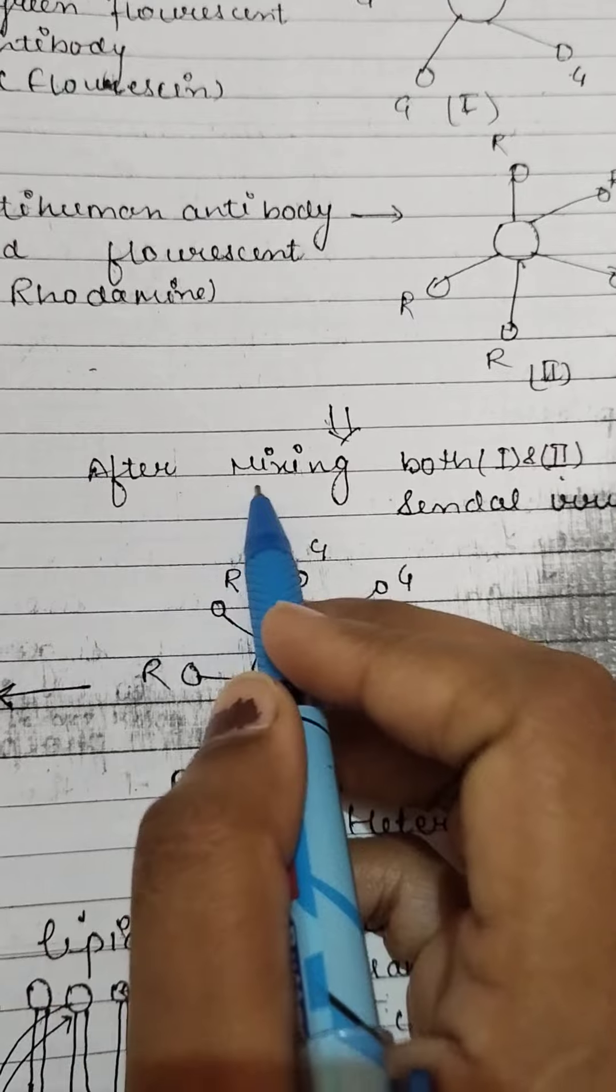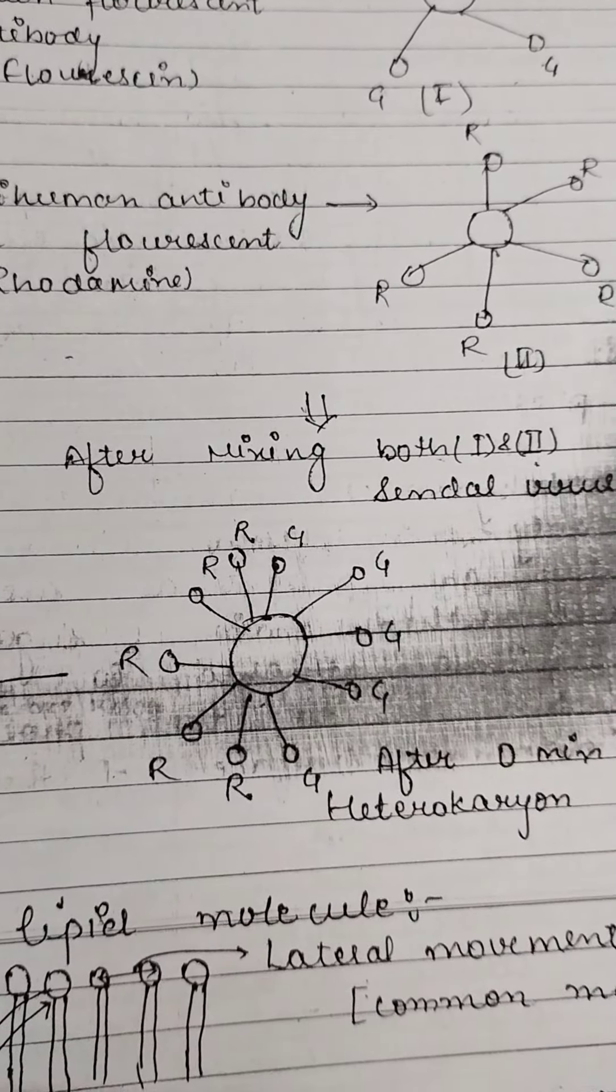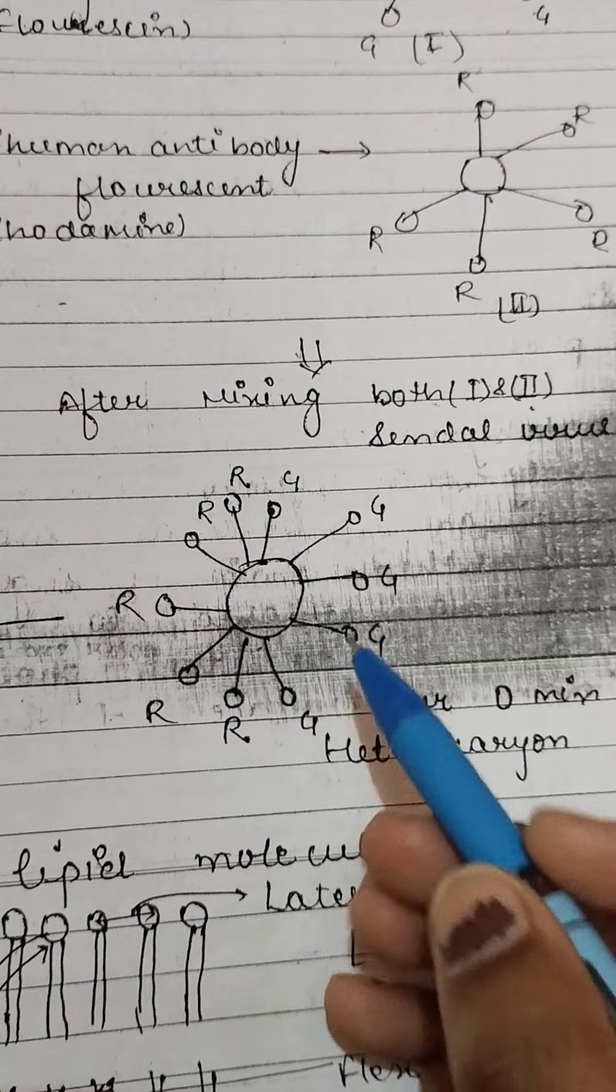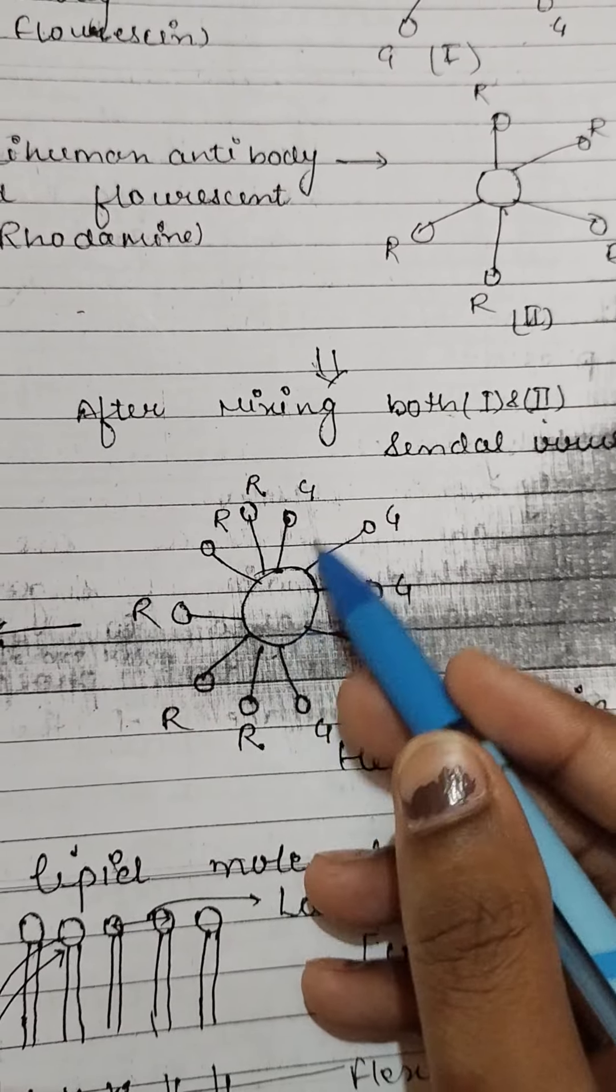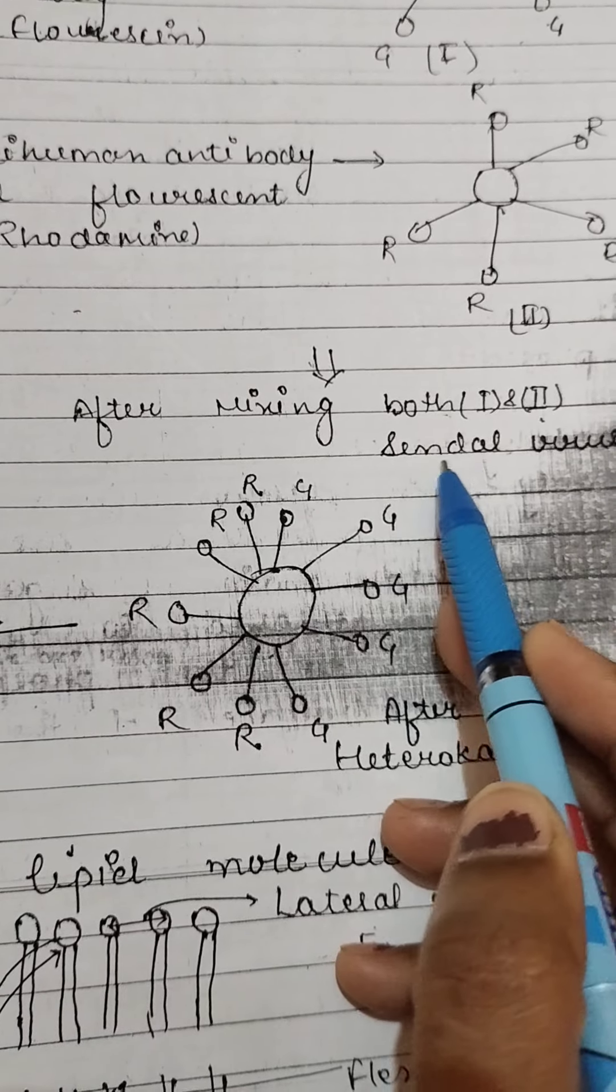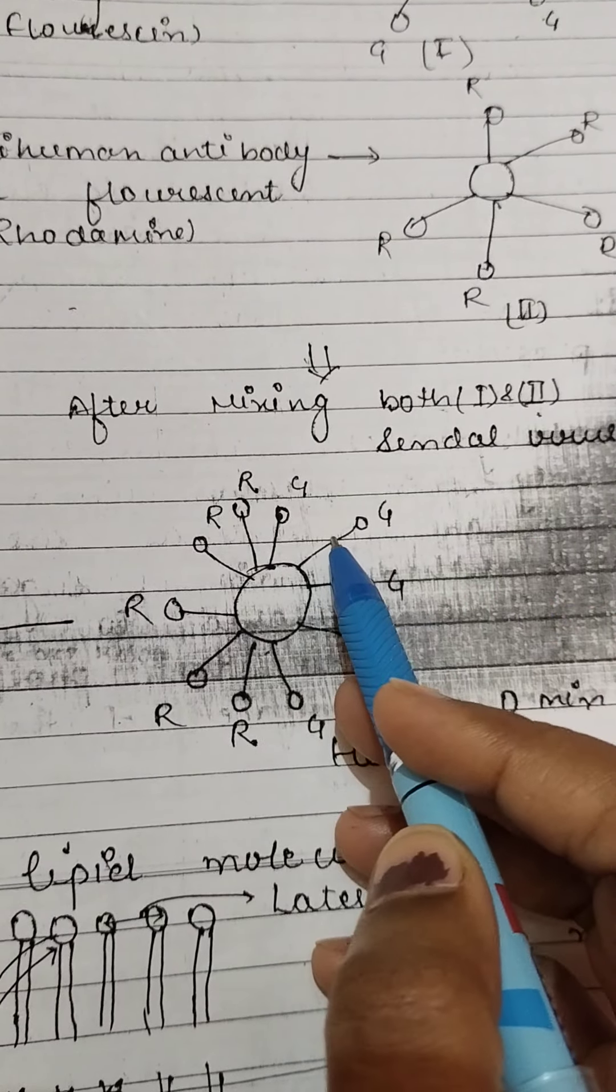After mixing both first and second, what are you seeing? Half portion is red and half portion is green. A sandal virus-like structure will appear.